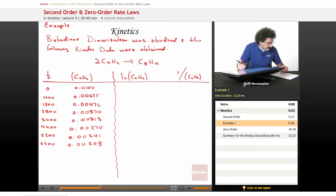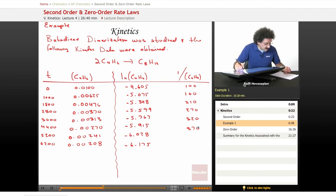Okay, so here's what the data looks like. Let's do logarithm first. We get minus 4.605, minus 5.075, minus 5.348, minus 5.599, minus 5.767, minus 5.915, minus 6.028, and our last one is minus 6.175. Reciprocals are a lot easier. What we have is 100, 160, 210, 270, 320, 370, 415, and 481.